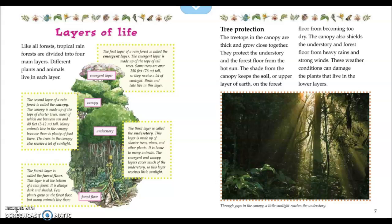Layers of Life. Like all forests, tropical rainforests are divided into four main layers, and different plants and animals live in each layer. The first layer is called the emergent layer, which is made up of the tops of tall trees. Some trees are over 250 feet tall, so they receive a lot of sunlight. Birds and bats live in this layer.